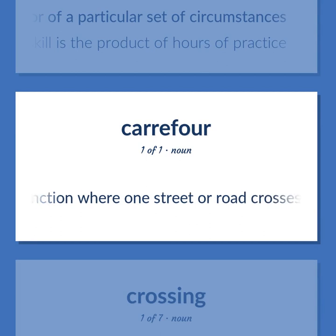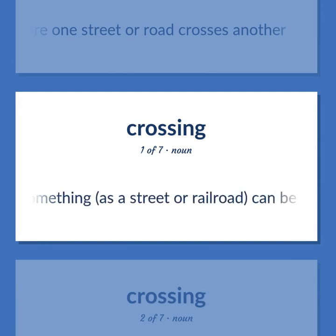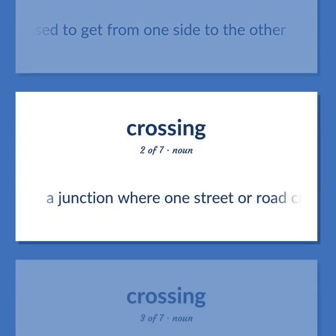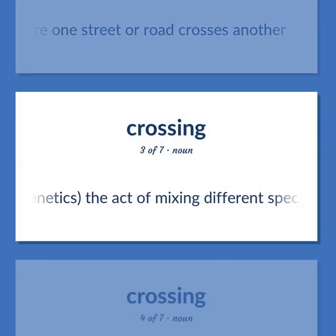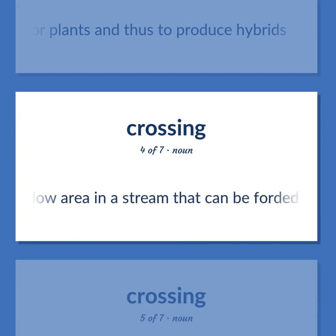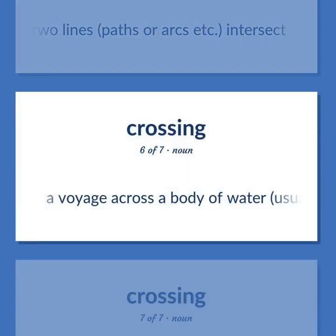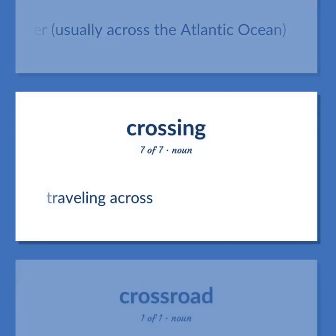Crossing. A junction where one street or road crosses another. A path, often marked, where something, as a street or railroad, can be crossed to get from one side to the other. Genetics: the act of mixing different species or varieties of animals or plants and thus to produce hybrids. A shallow area in a stream that can be forded. A point where two lines, paths or arcs etc. intersect. A voyage across a body of water, usually across the Atlantic Ocean. Traveling across.